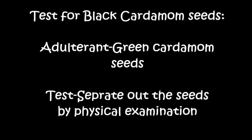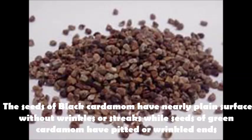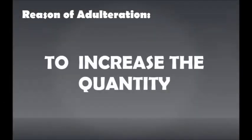Test for Black Cardamom Seeds — adulterant: green cardamom seeds. Separate out the seeds by physical examination. The seeds of black cardamom have a nearly plain surface without wrinkles or streaks, while seeds of green cardamom have pitted or wrinkled ends. Reason of adulteration: to increase the quantity.